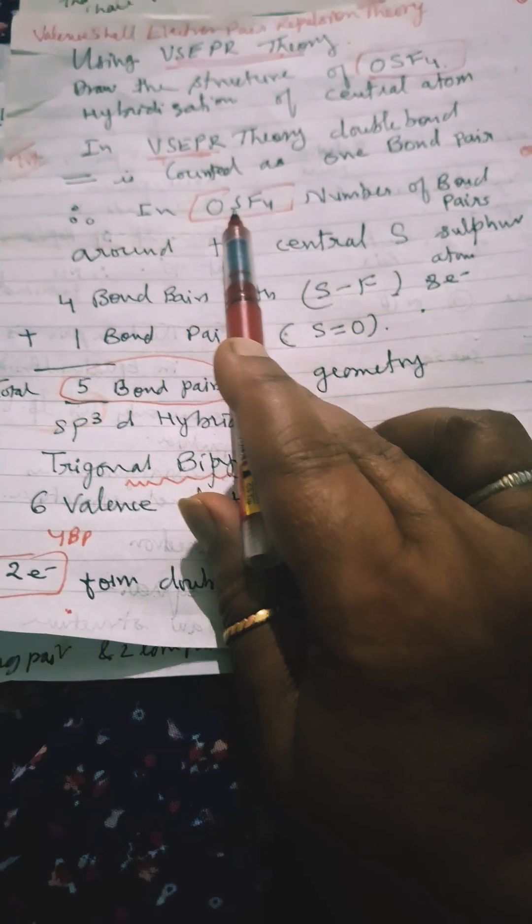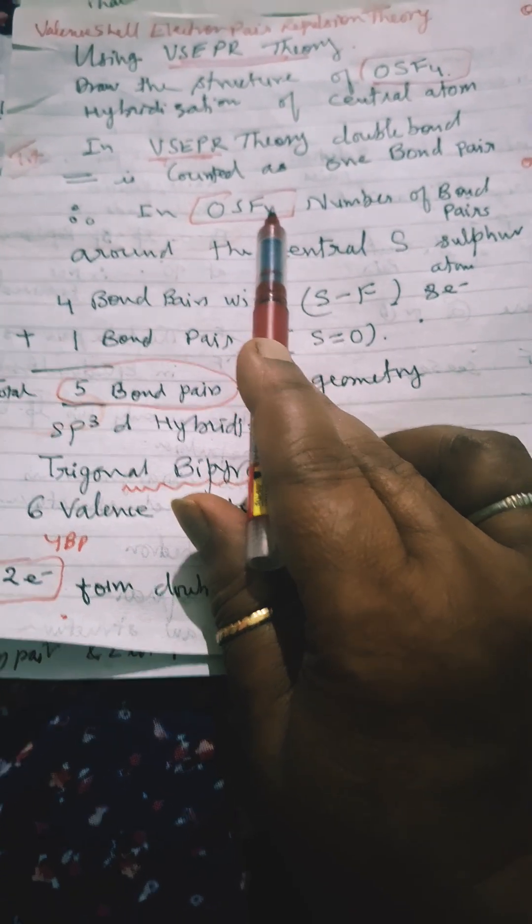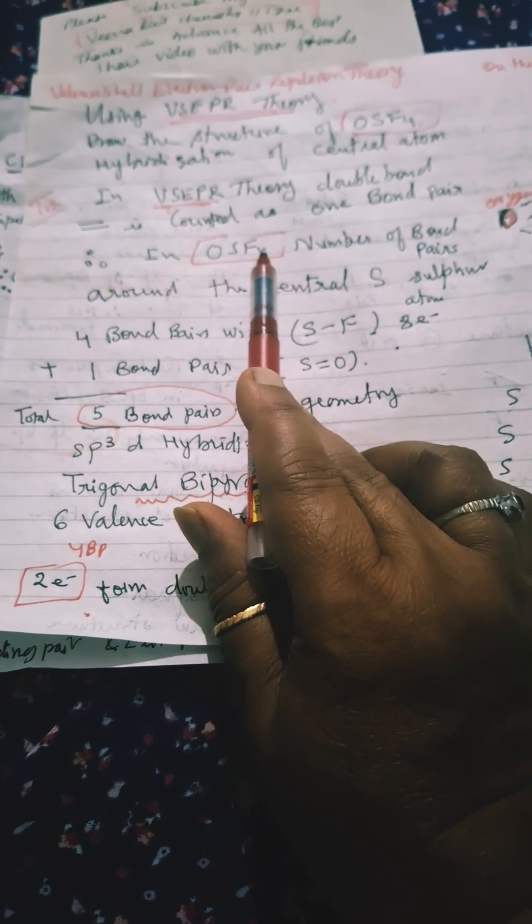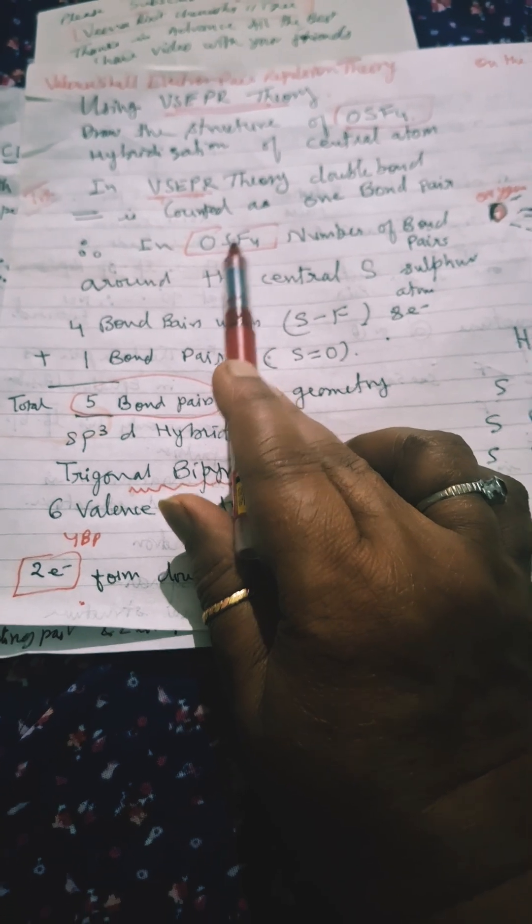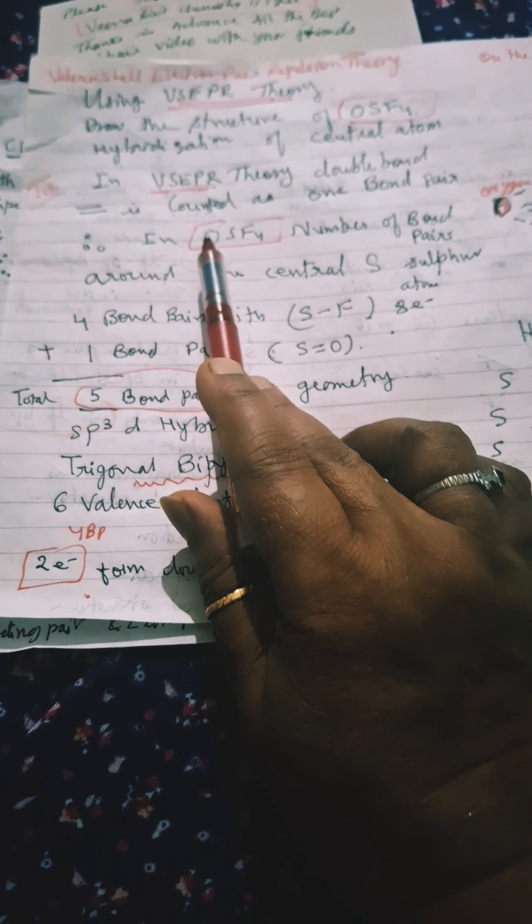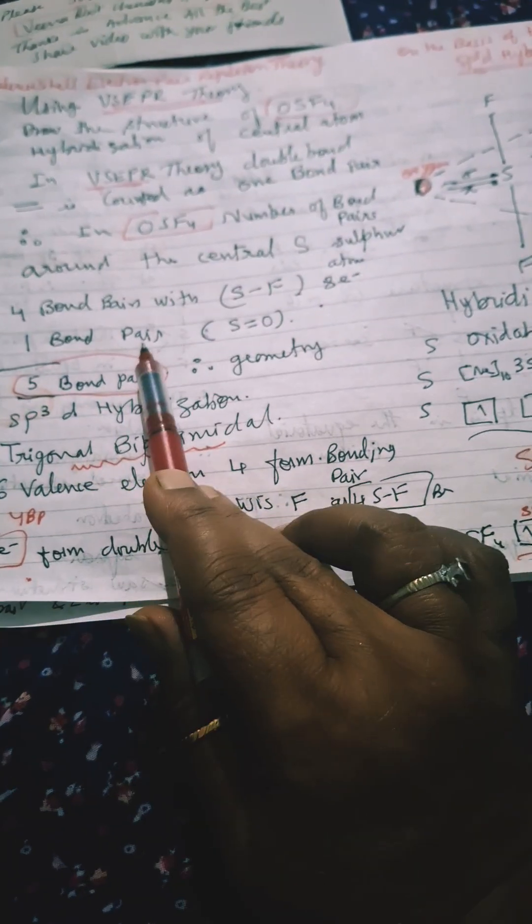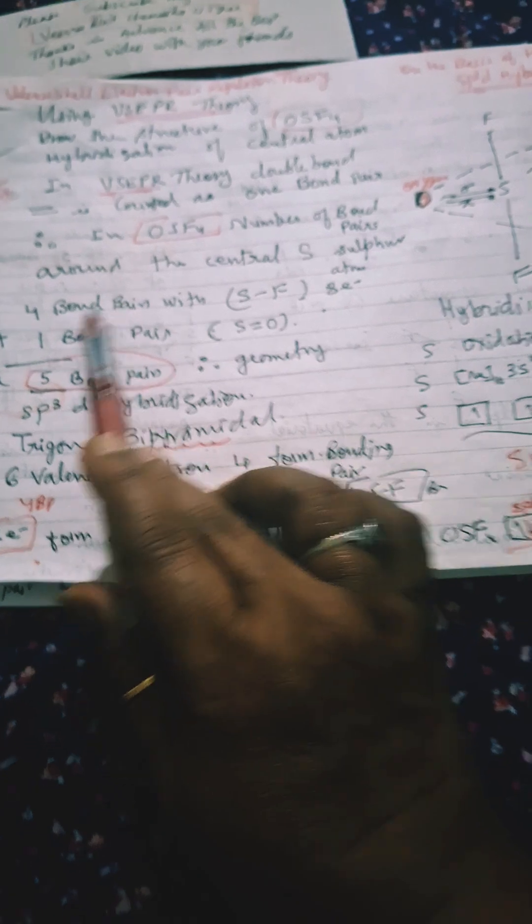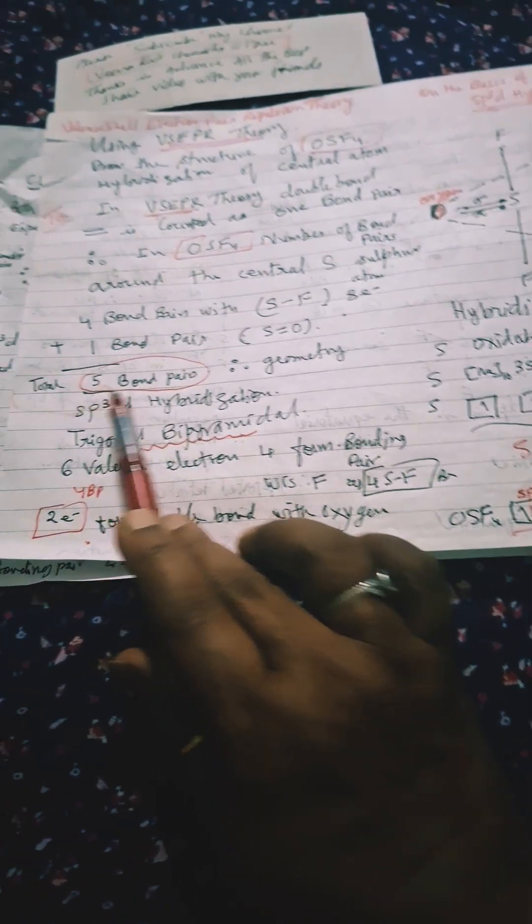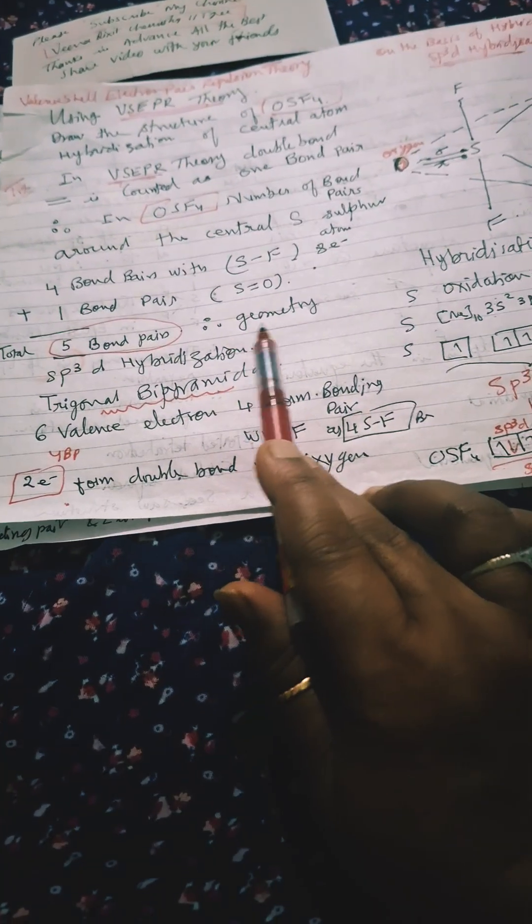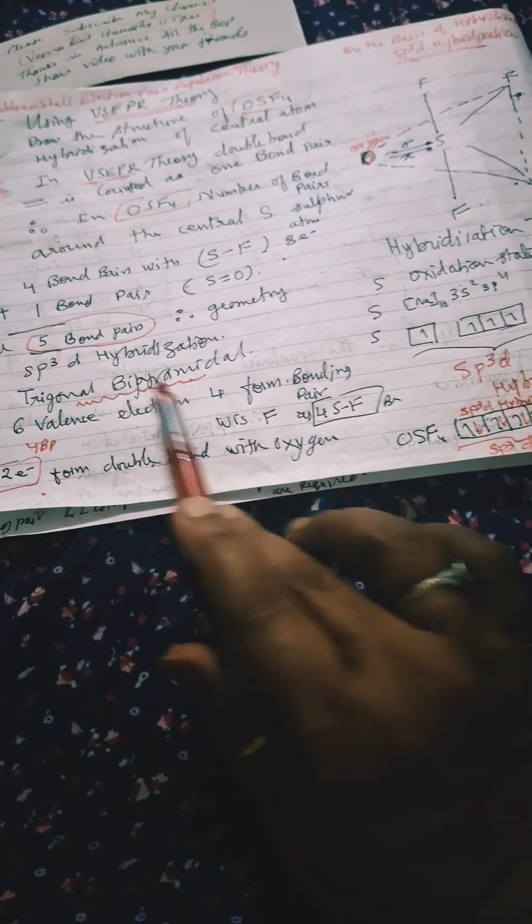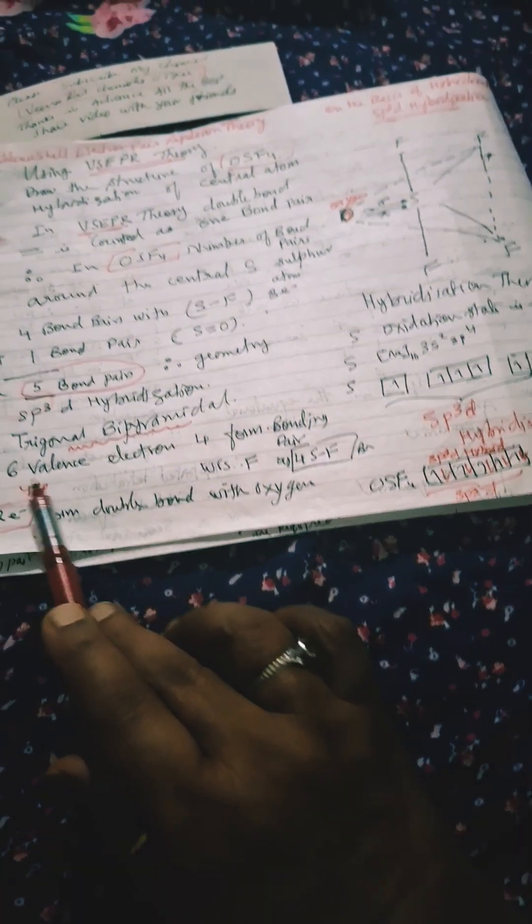Around sulfur there are four fluorine atoms, so four bonding pairs with SF bonds, and oxygen is double bonded with sulfur. We consider it as one bond pair also. So four bonding pairs and one bond pair means five bond pairs total. The geometry will be trigonal bipyramidal. Six valence electrons of sulfur are there.